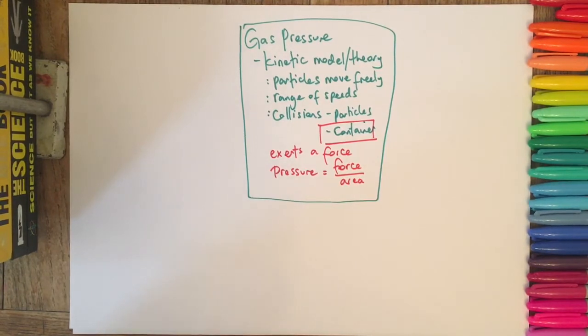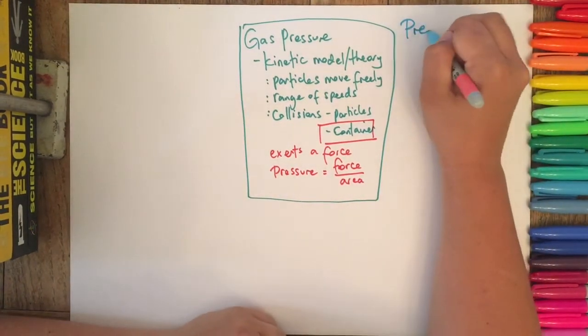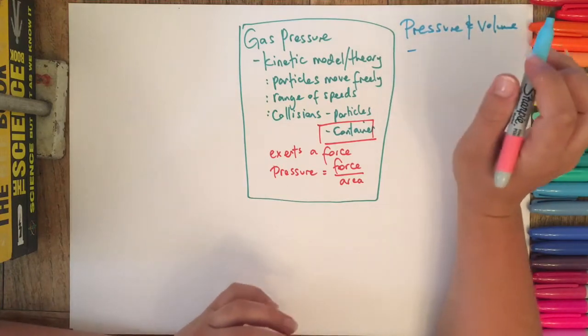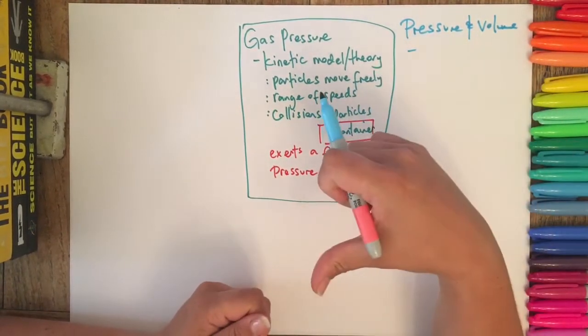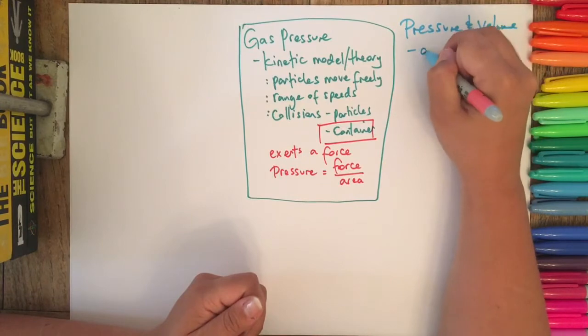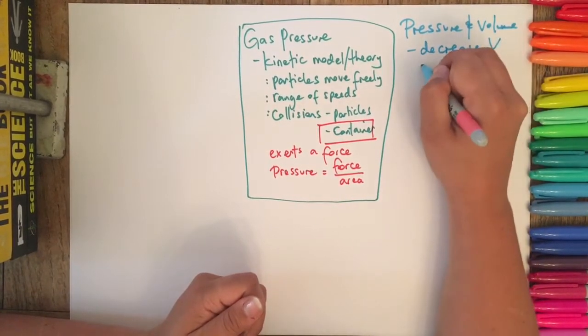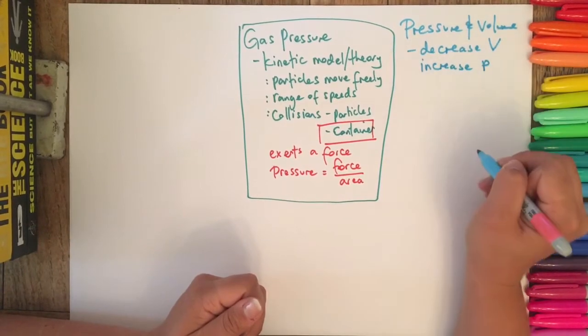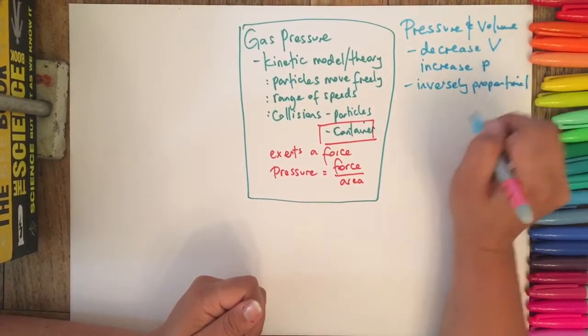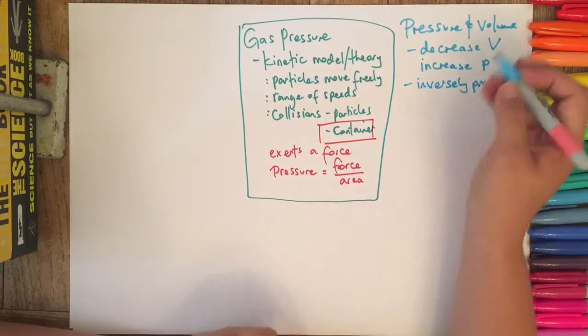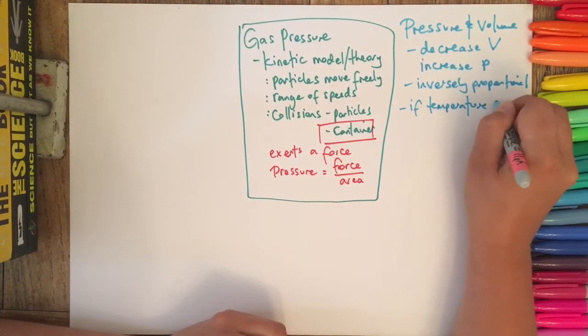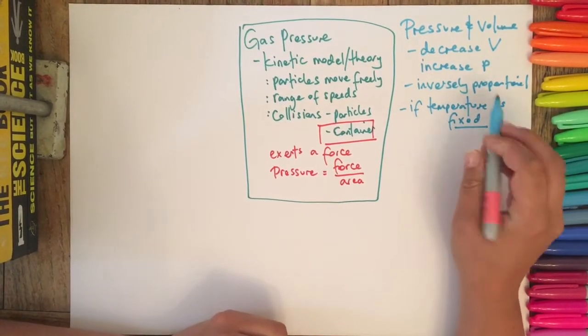So one of the things you need to know about is the relationship between pressure and volume. You've probably done an experiment maybe with a closed syringe where if you try to push the plunger in, you can feel the pressure as you're trying to decrease the volume. So if we decrease the volume then we increase the pressure, and so what this means is they are inversely proportional.